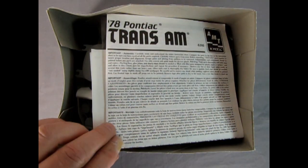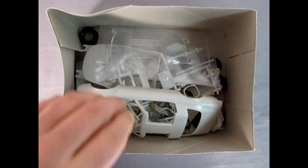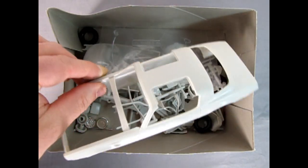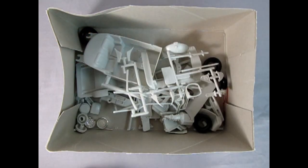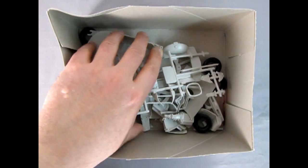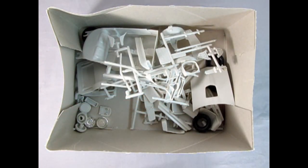Right away we get our nice Trans Am instruction sheet as well as the decals which we'll take a look at at the end of the video. Our chrome parts tree in a bag. Now I do believe we were working on this model but there is the body and then our glass in a bag as well, and then all the plastic components down here as well as the wheels and tires in the corner.